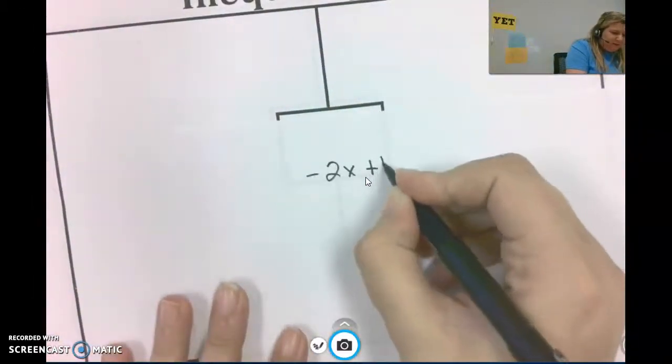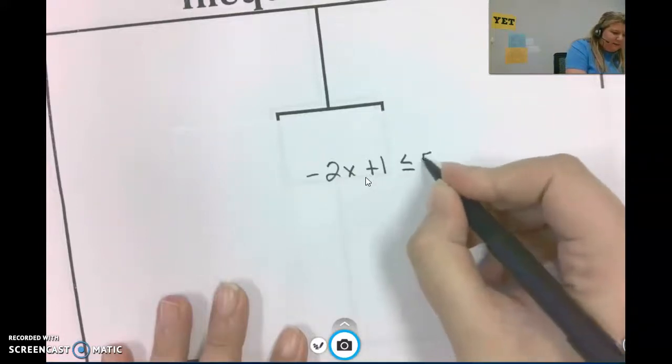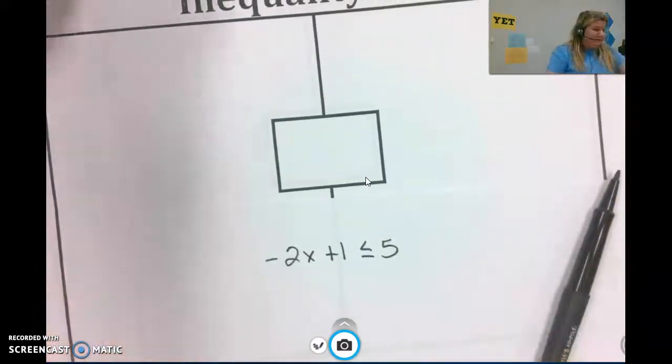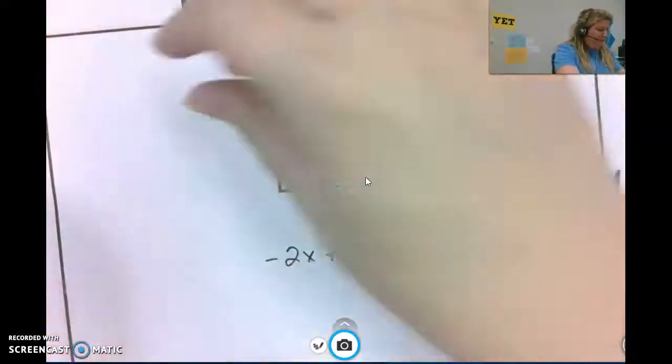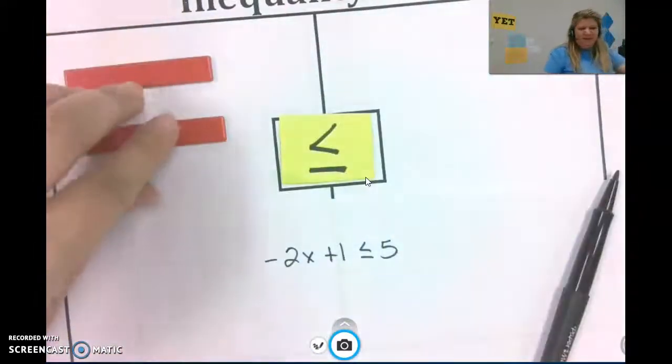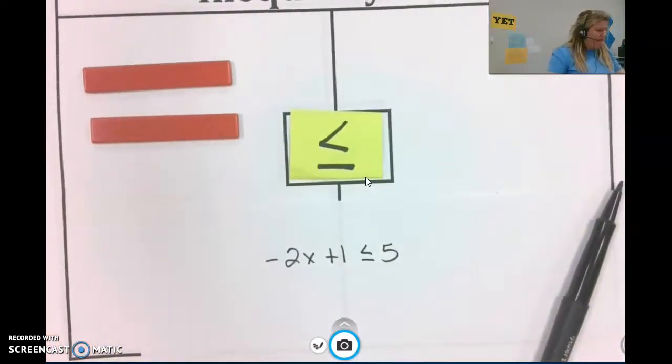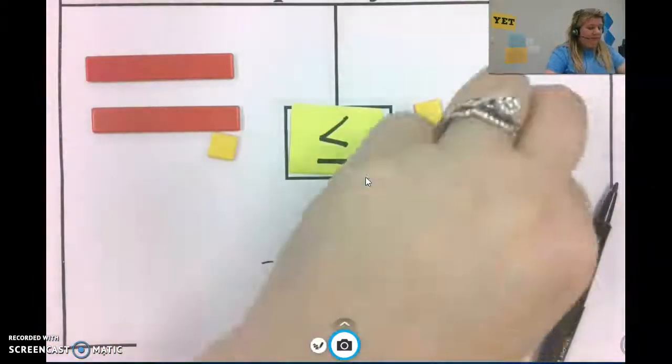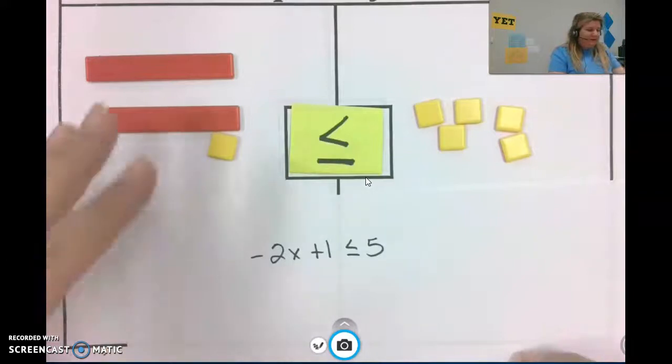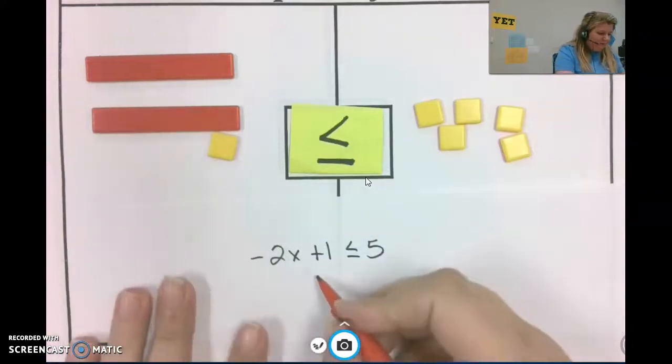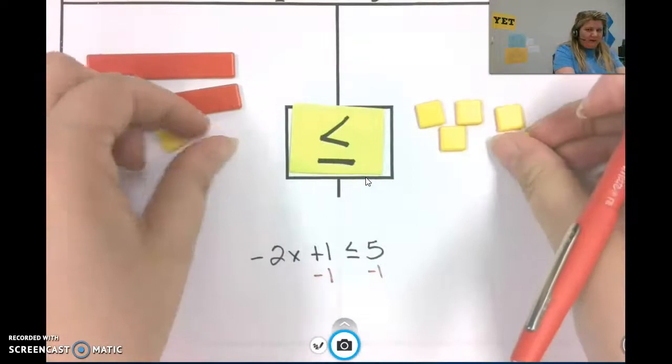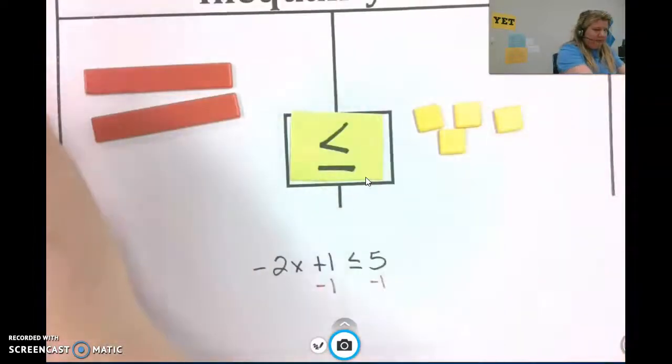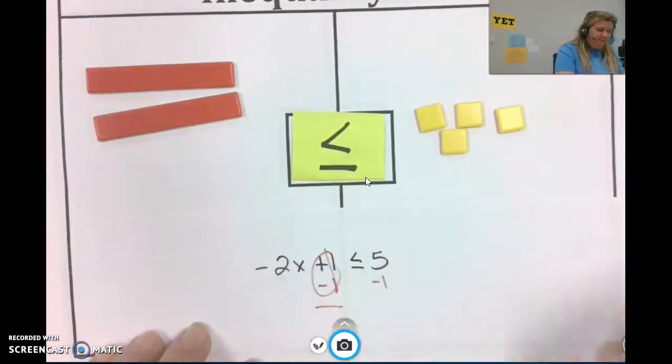Negative 2x plus 1 is less than or equal to 5. So this is very similar to the last problem. Except we have other x's are negative. So I wonder how we'll do that. Plus 1 less than or equal to 5. So in my goal to isolate the variable, I need to take one away from each side. All right. Done that. That's eliminated.